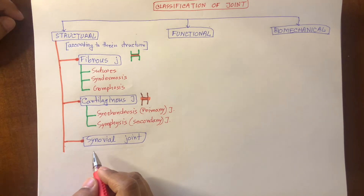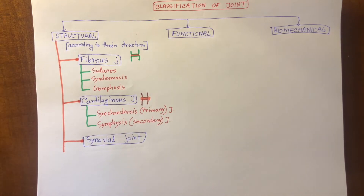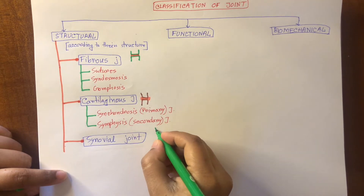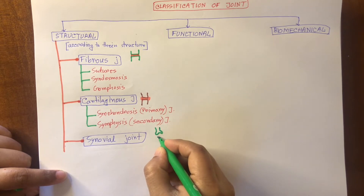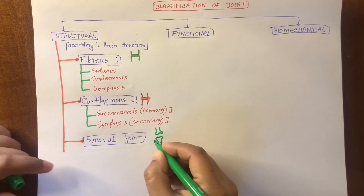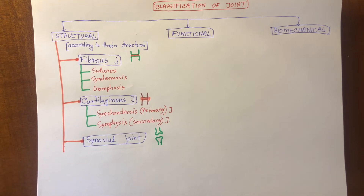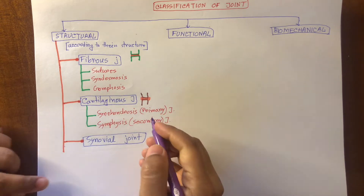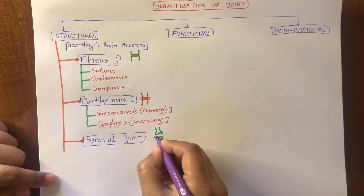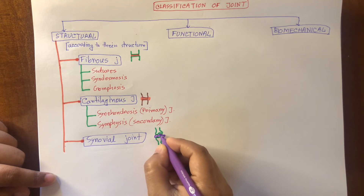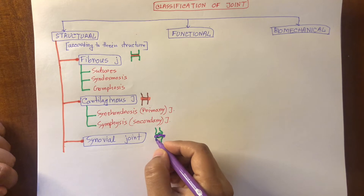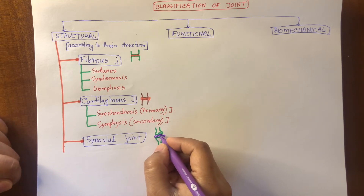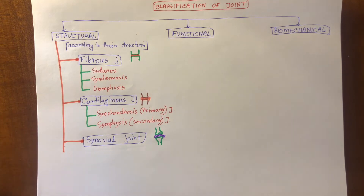Now let's see the synovial joint. The synovial joint is the most common type of joint in our body. Suppose this is one bone and this is another bone — these two bones are connected by a synovial layer, and this synovial layer is filled with synovial fluid. Because of this synovial fluid, this joint can be freely movable. So this is the freely movable joint.